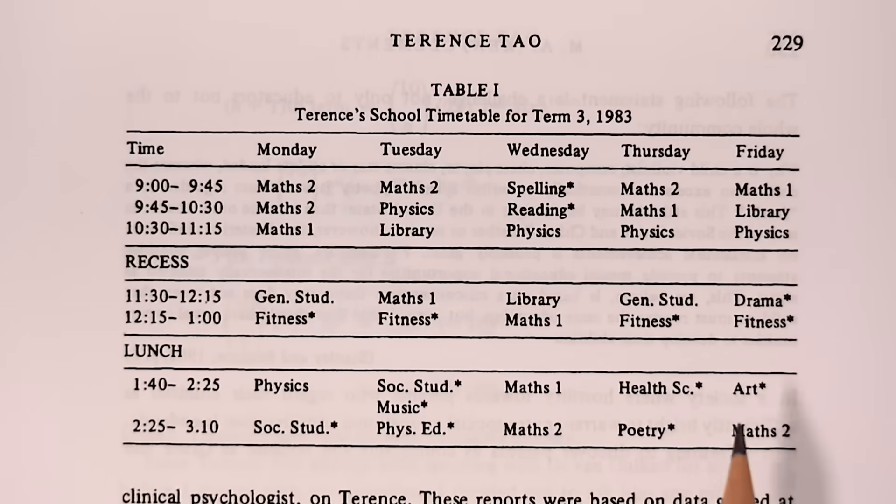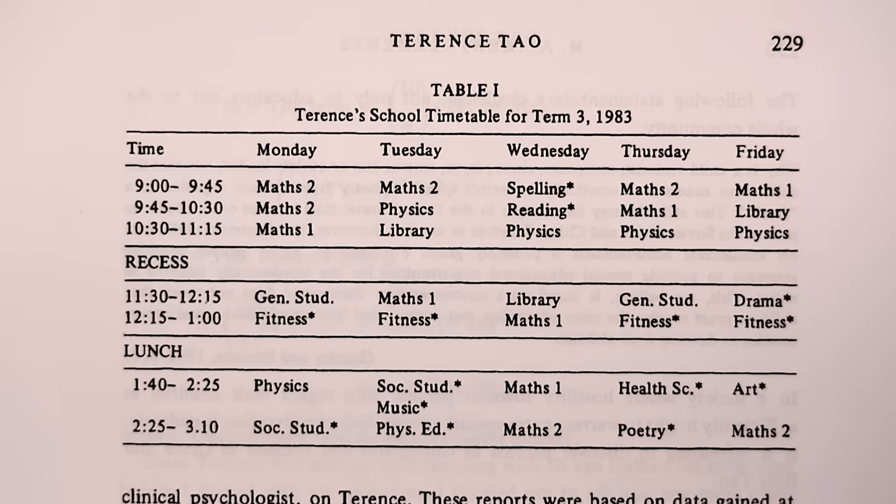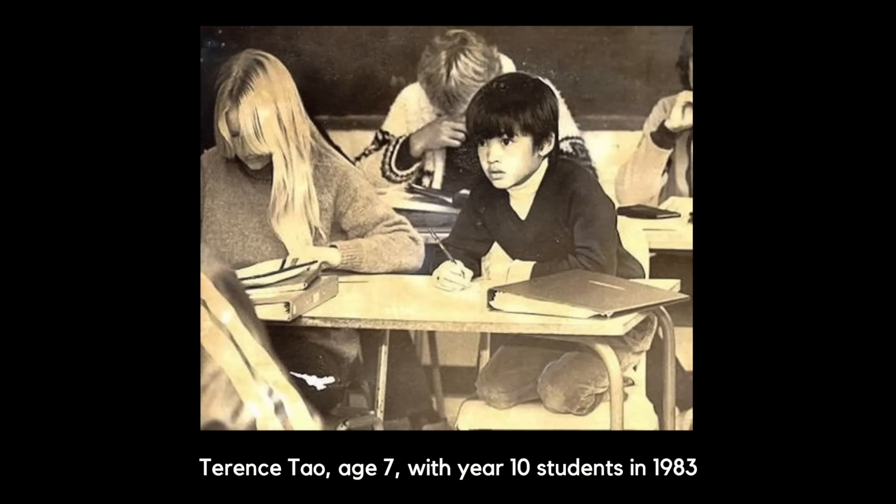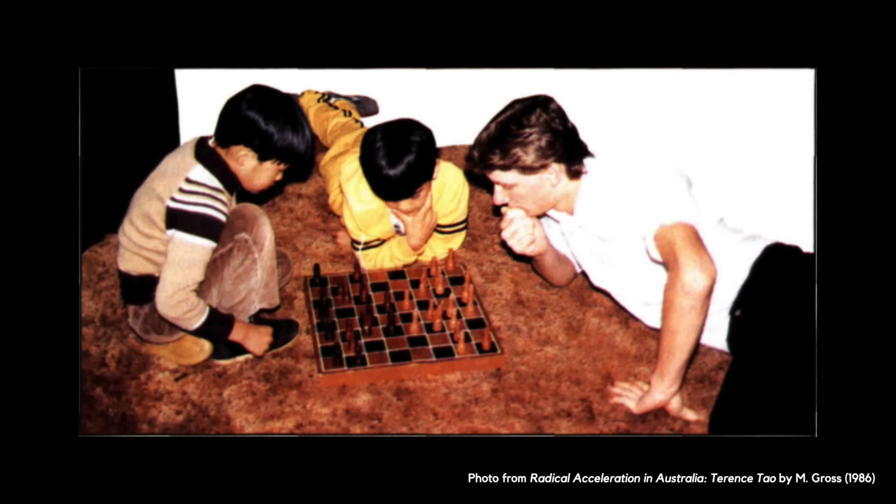Included in the report was Terence's school timetable. The subjects marked with the asterisks took place at the primary school, whilst all the others took place at the high school. His teachers said that whilst seven-year-old Terence did have the academic ability of a 16 year old, his maturity was still that of a seven-year-old. Terence's parents had to balance giving him a childhood that challenged him intellectually, but also allowed him to fit in socially and emotionally. The report makes it clear that rather than being pushed along one rigid track of mathematical education, Terence was allowed to pursue the topics that interested and challenged him the most.